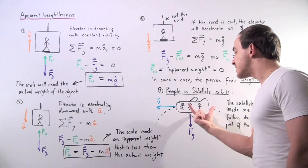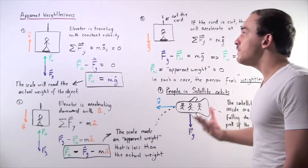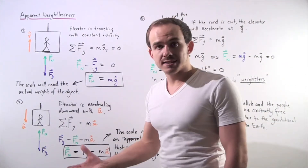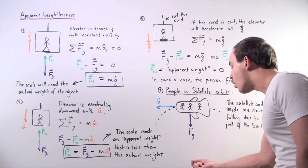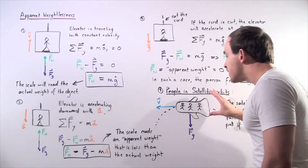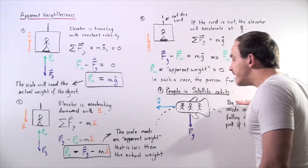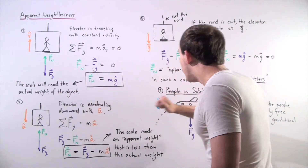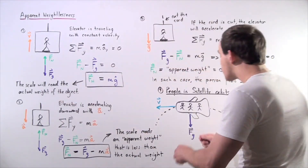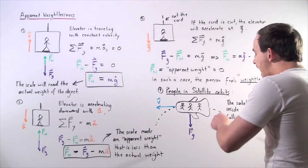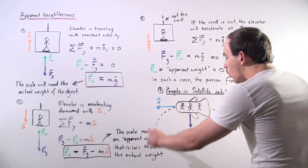These people, just like the person in the elevator, feel apparent weightlessness because they are constantly free falling. The satellite and people inside want to move in a straight direction, but gravity pulls down on them, causing them to follow a circular orbit around the Earth.